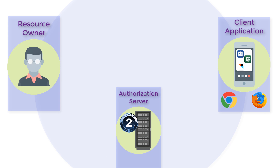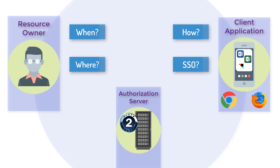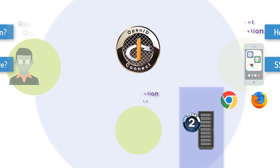OAuth pseudo-authentication also has other limitations. For example, it can't provide when, where, and how the authentication actually occurred. It doesn't allow federated single sign-on either. OpenID Connect can extend OAuth so cloud-based applications can get identity information, retrieve details about the authentication event, and allow federated single sign-on.